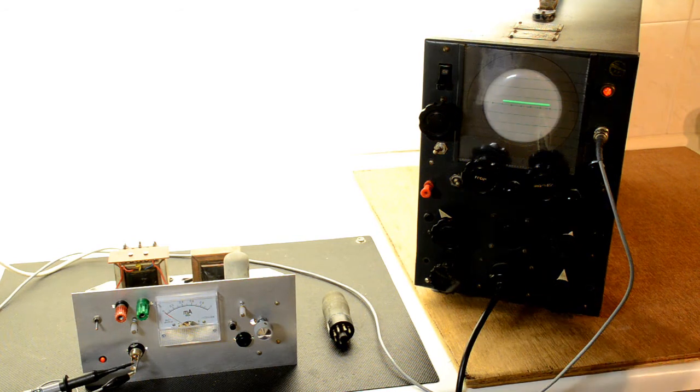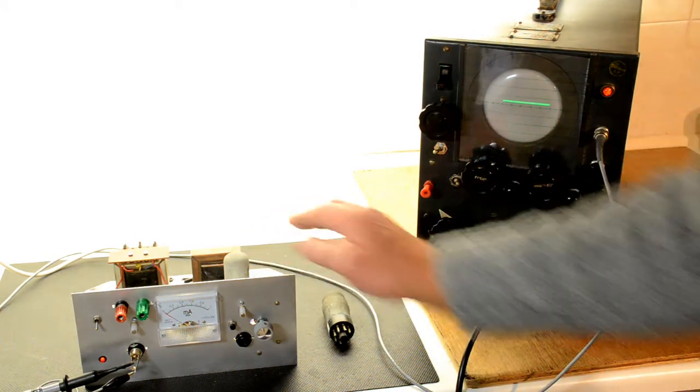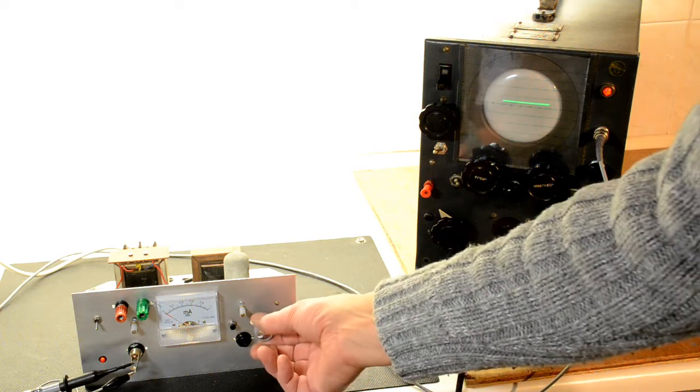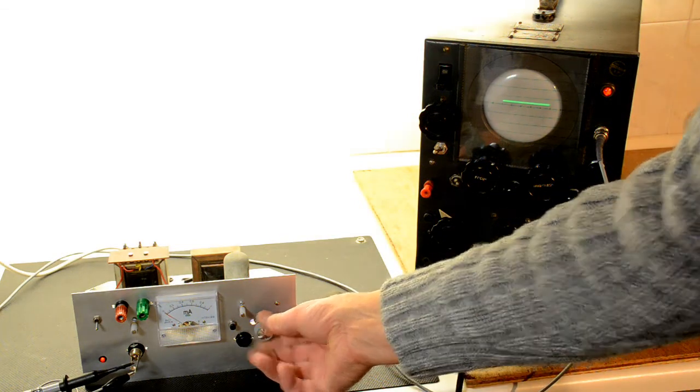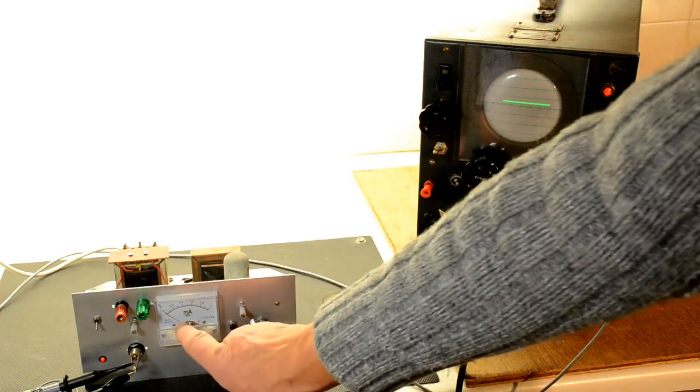Here we go. So this is the circuit now with the 6K25 Thyratron in position. We have the bias 18 volts. Nothing on the scope. No current being drawn.